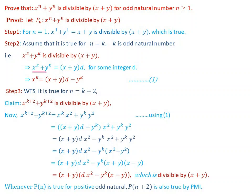In other words, x to the power of k plus y to the power of k is divisible by x plus y means x to the power of k plus y to the power of k equals x plus y times d, for some integer d.